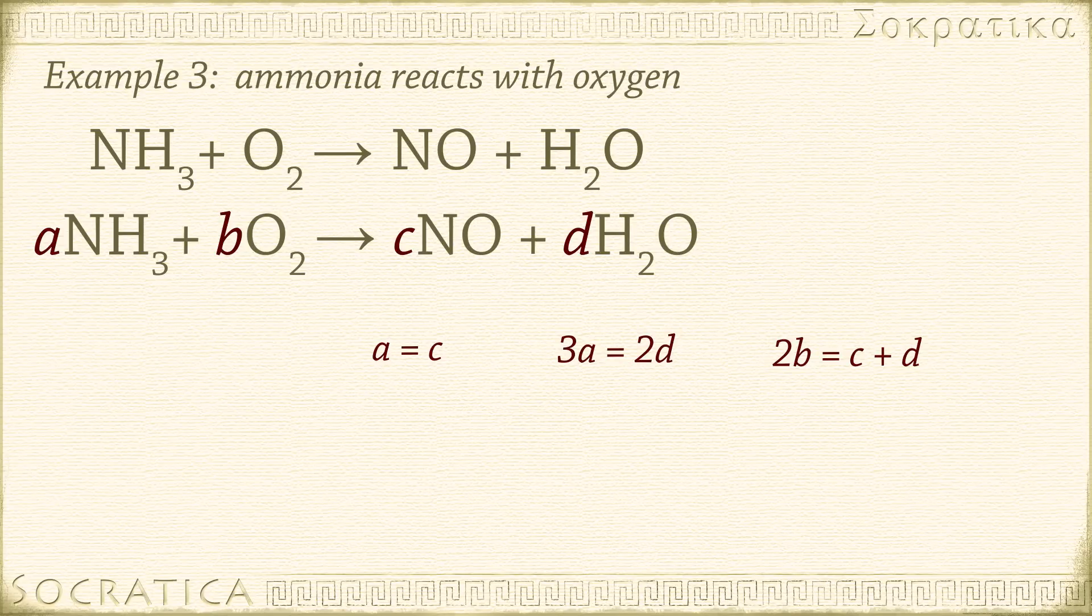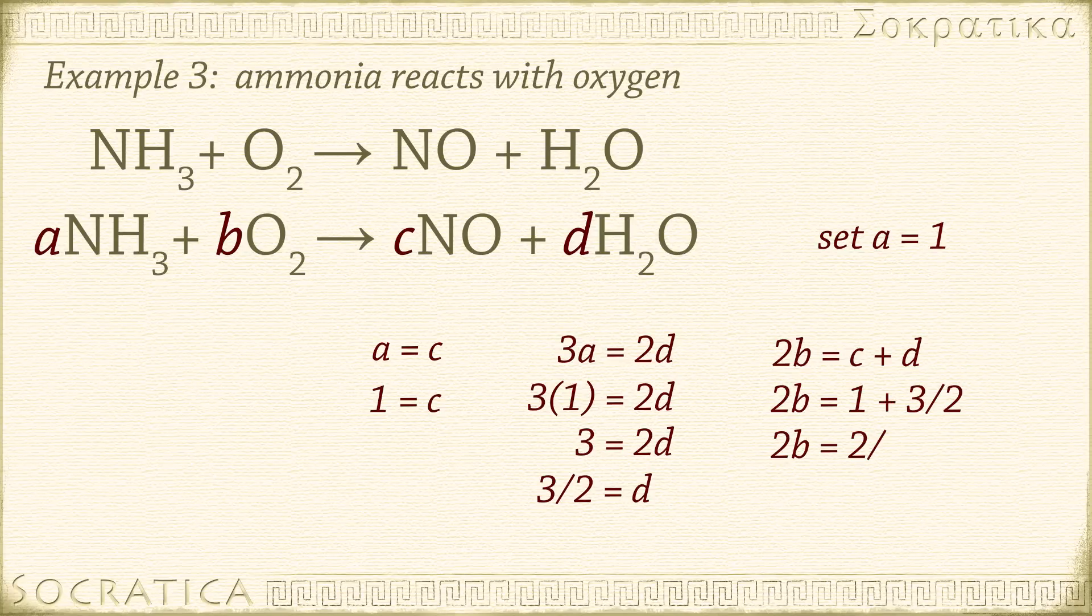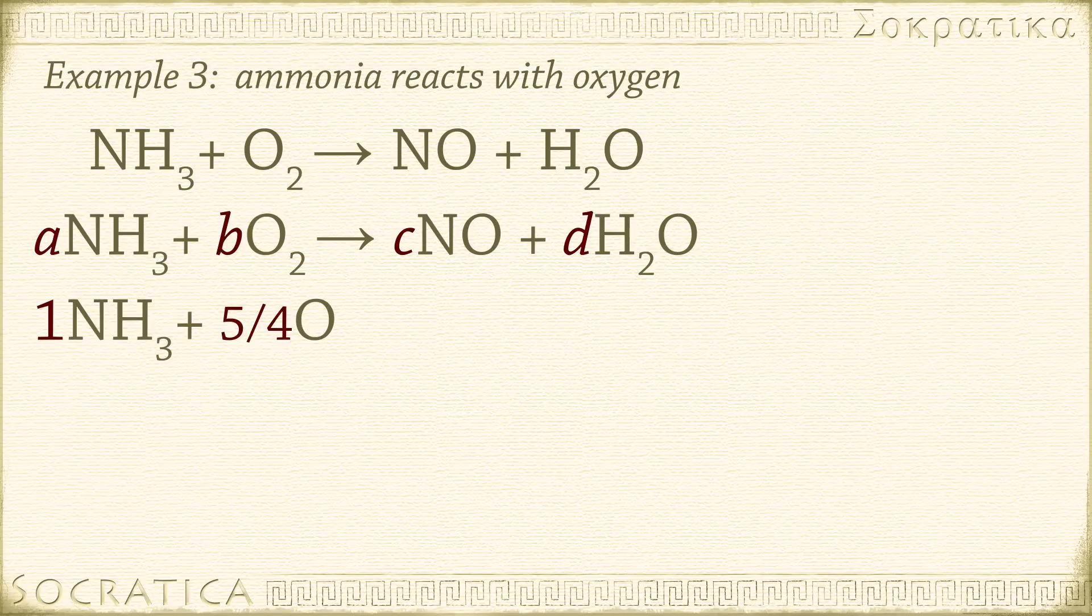Let's say we start with one molecule of ammonia, so A equals 1. If A equals 1, C equals 1. Plugging A equals 1 into the second equation gives us 3 times 1 equals 2D. 3 equals 2D. D equals 3 over 2. The final equation is then 2B equals 1 plus 3 over 2, equals 2 over 2 plus 3 over 2 equals 5 over 2. Divide both sides by 2. B equals 5 over 4. Put in our coefficients into ANH3 plus BO2 yields CNO plus DH2O. That gives us 1 NH3 plus 5 over 4 O2 yields 1 NO plus 3 over 2 H2O.